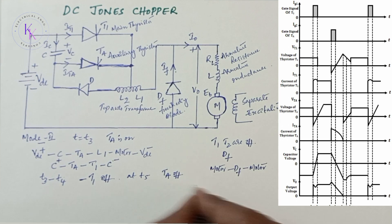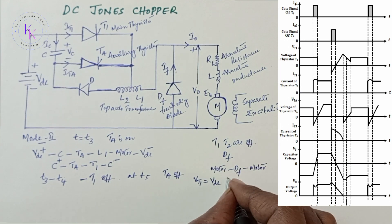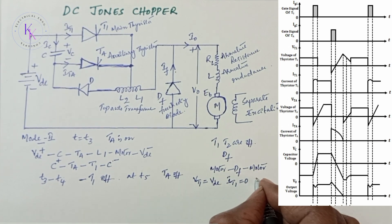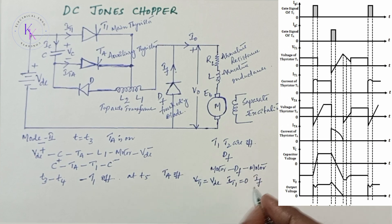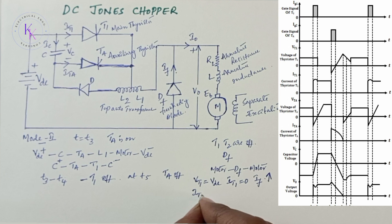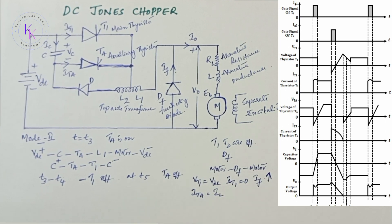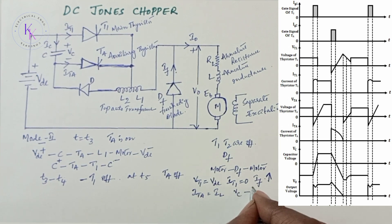At this time, the voltage across the main thyristor equals VDC, current IT1 equals zero, current through the freewheeling diode is increasing, current through the auxiliary thyristor equals the load current IL, and voltage across capacitor VC is decreasing.